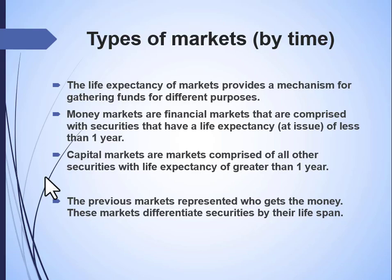Another way to classify financial markets is by time — specifically the life expectancy of the security. Money markets are comprised of securities that have a life expectancy at issue of less than one year. Capital markets cover everything else. There are quite a few different types of money market securities, but they share the characteristic of having less than one year of life at issue.